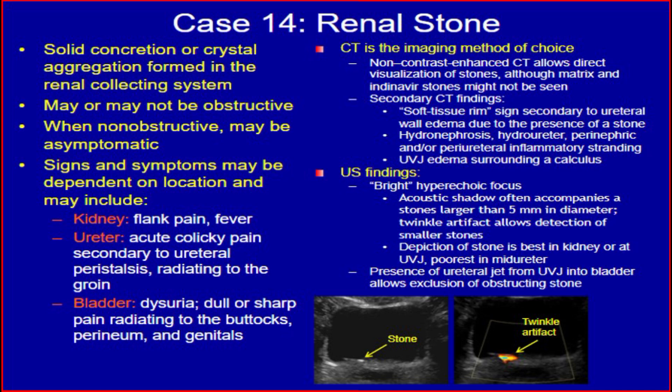CT is the imaging method of choice. Non-contrast enhanced CT allows direct visualization of stones, although matrix and indinavir stones might not be seen. Secondary CT findings include: number one, soft tissue rim sign secondary to ureteral wall edema due to the presence of a stone; number two, hydronephrosis, hydroureter, perinephric and/or periureteral inflammatory stranding; number three, ureterovesical junction edema surrounding a calculus.